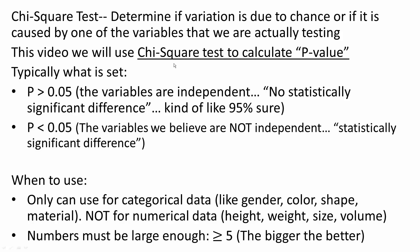In this video, we will use chi-square test to calculate p-value. Chi-square test is used to determine if variation is due to chance or if it is caused by one of the variables that we are actually testing.